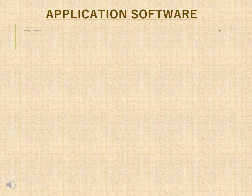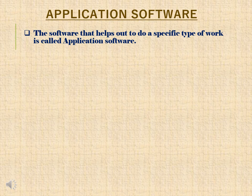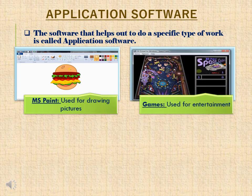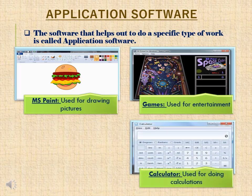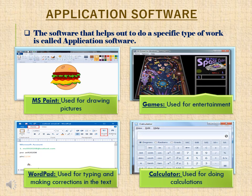Application software is the software that helps you to do a specific type of work. Using application software, we can do a particular job. For example: MS Paint — used for drawing pictures; Games — used for entertainment; Calculator — used for doing calculations; Wordpad — used for typing and making corrections in text. Hence, a particular work can be done using these kinds of software.